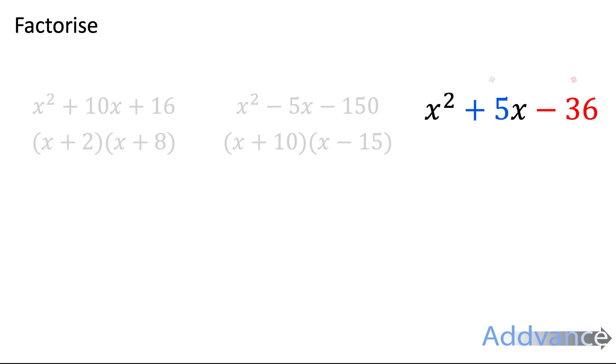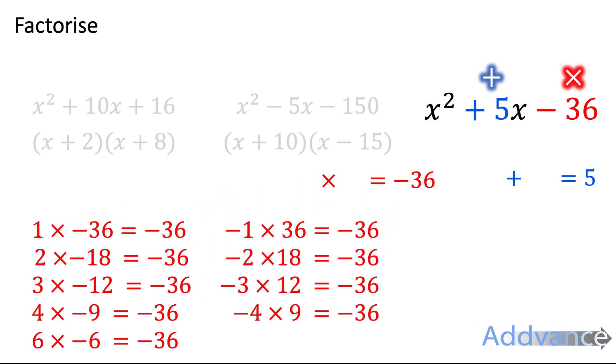Finally, x squared plus 5x minus 36. Looking for two numbers that multiply to make minus 36, and add to make 5. Okay, here are all the pairs. And can you spot the pair that adds to make 5? It is minus 4 and 9.